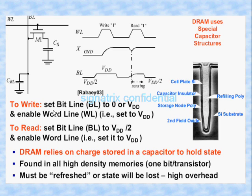For a read operation: set the bit line to VDD/2, meaning it is pre-charged to half of the supply voltage. So now the bit line will have VDD/2 voltage.